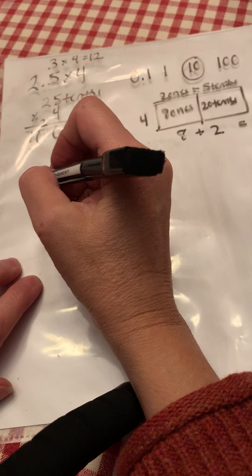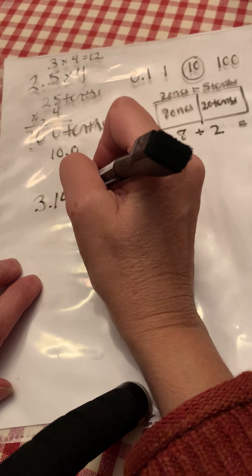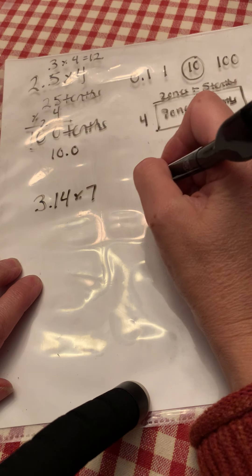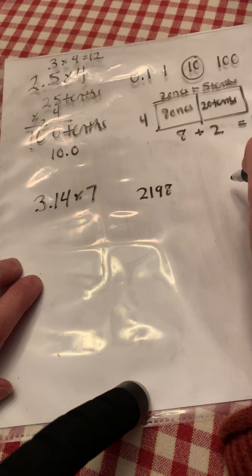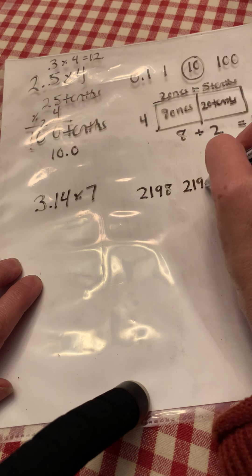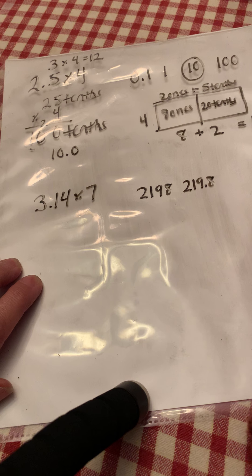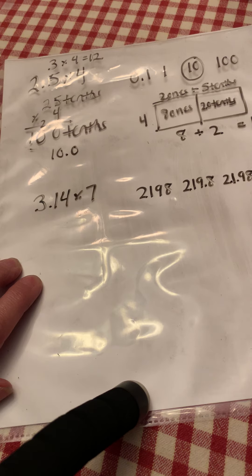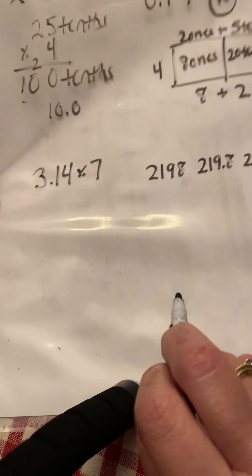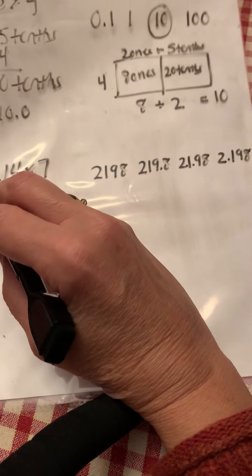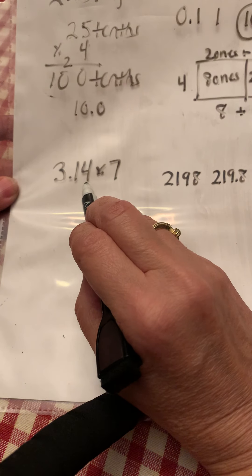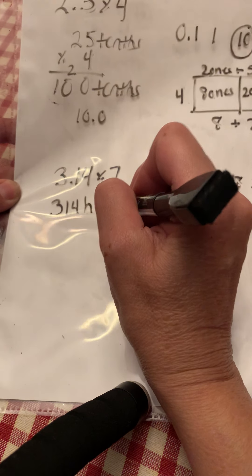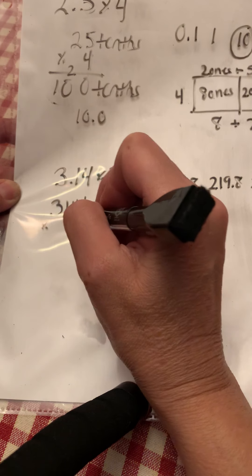All right. Question number two asked you 3.14 times 7. And they gave you some choices. They said it could be 2,198, 219.8, 21.98 hundredths, or 2.198 thousandths. So to find the most reasonable answer, we would look at our number and we would say, okay, the smallest unit is hundredths. So I know this is 314 hundredths times 7.